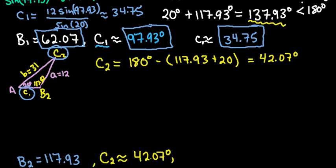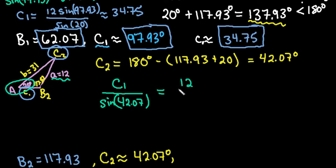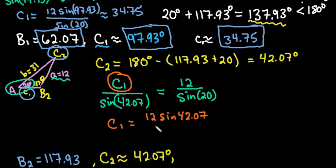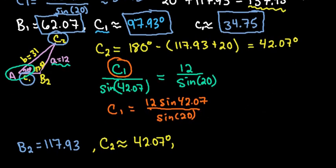One last thing to find. I know that this is a long process. The last thing that we need to find is C2. So again, we would put C2 over sine of 42.07. And we're going to use the given relationship. So we're going to use little A and big A, since those were both given to us. And we would just say that 12 over sine of 20. Now, to find C2, we would just take and multiply both sides by sine 42.07.